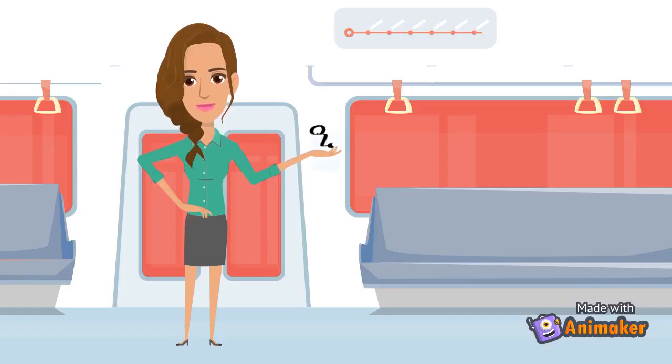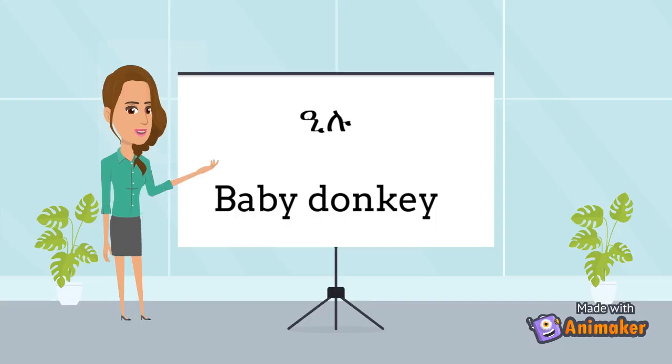Our third letter is E. One word that has the letter E is ELU. This means baby donkey.